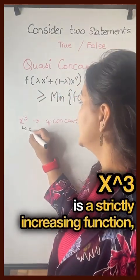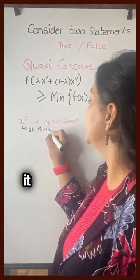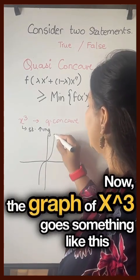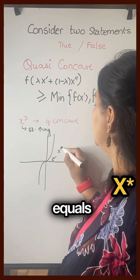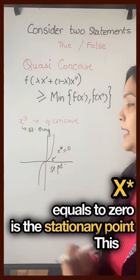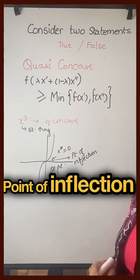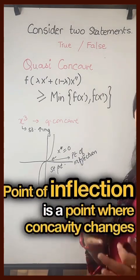Now the graph of x³ goes something like this, and x* equals zero is the stationary point. This is in fact a point of inflection. A point of inflection is a point where concavity changes.